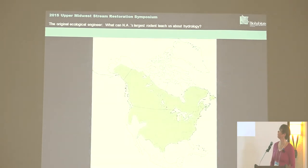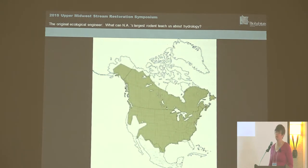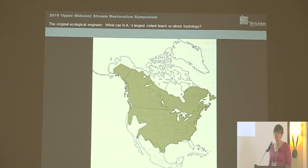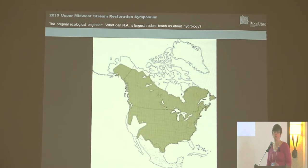So why beaver? Beaver are historically present throughout most of the North American continent. The only state in the United States that did not have beaver was Hawaii — they couldn't swim that far. They're present in almost any type of ecosystem, from the boreal forest up north down to the arid southwest. They got mostly trapped out starting in the 1600s by the fur trade industry, and by the early 20th century there was no beaver trapping allowed in parts of the United States due to low population numbers.